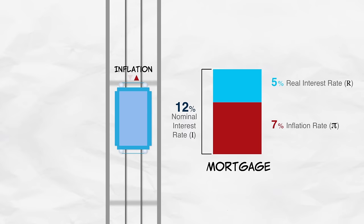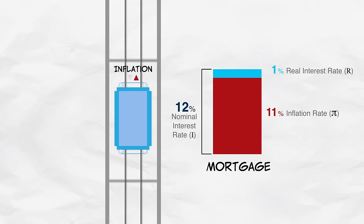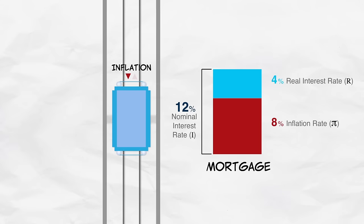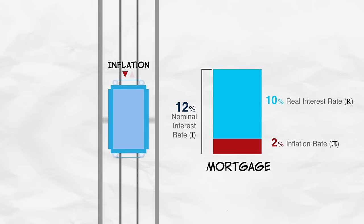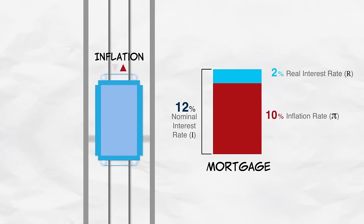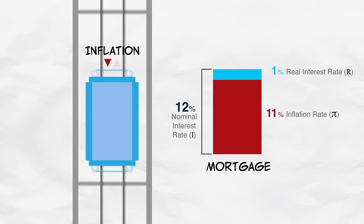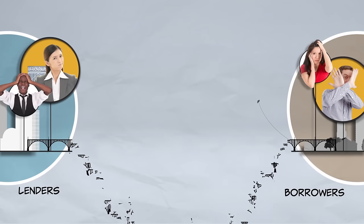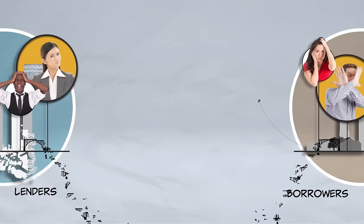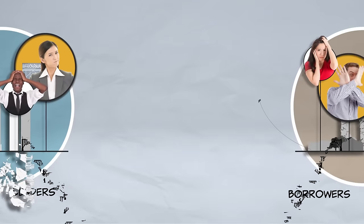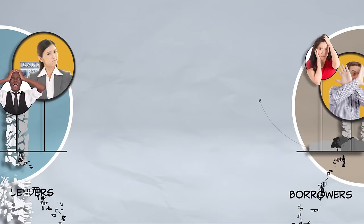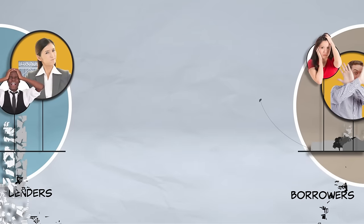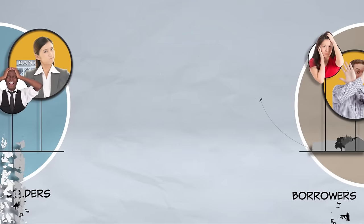As inflation heats up, for example, long-term mortgages and long-term lending of all kinds become more costly and less common. The economy becomes less able to generate and coordinate savings with investment. And as a result, total wealth declines.